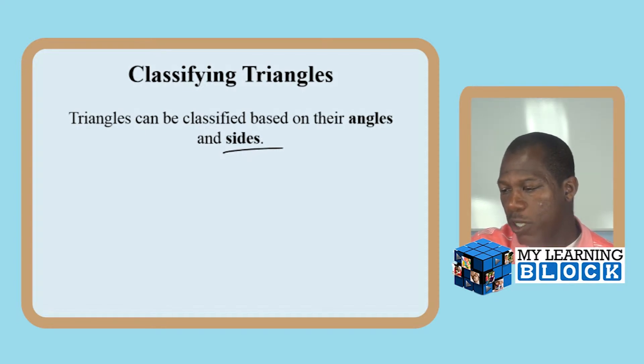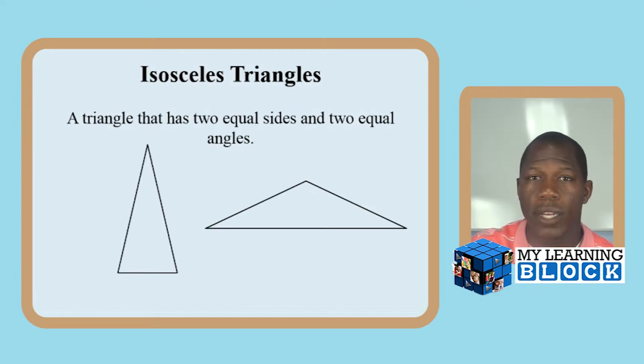So we're going to focus on isosceles triangles. ISO meaning one, meaning there's one set of sides that are equal. An isosceles triangle is a triangle that has two equal sides and two equal angles.